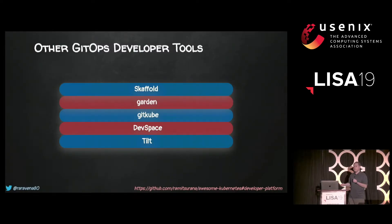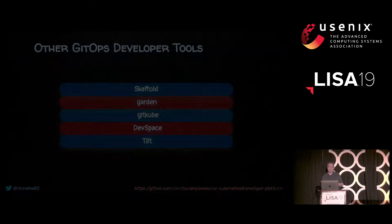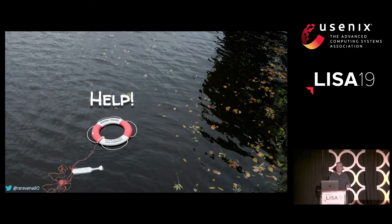There are many other GitOps developer tools I won't cover in detail — feel free to ask me about them afterwards. Another notable one is Skaffold by Google Cloud, which is similar to Draft.